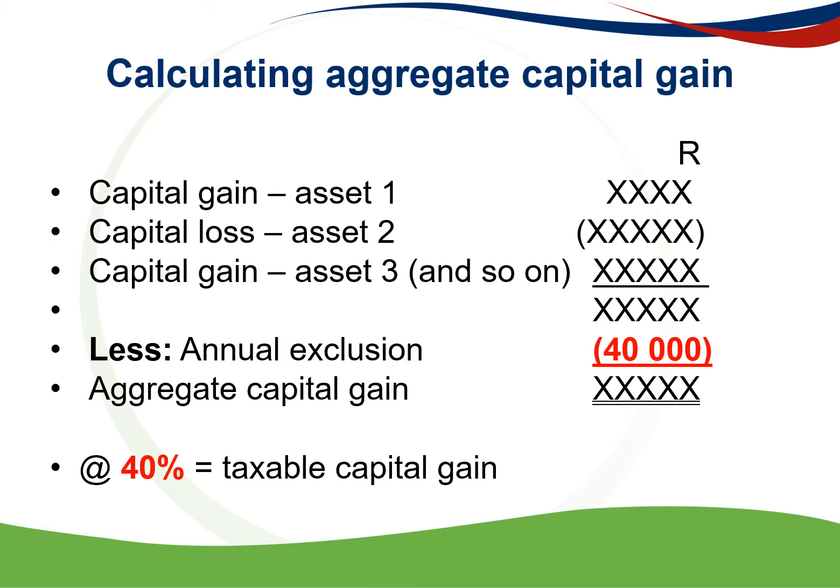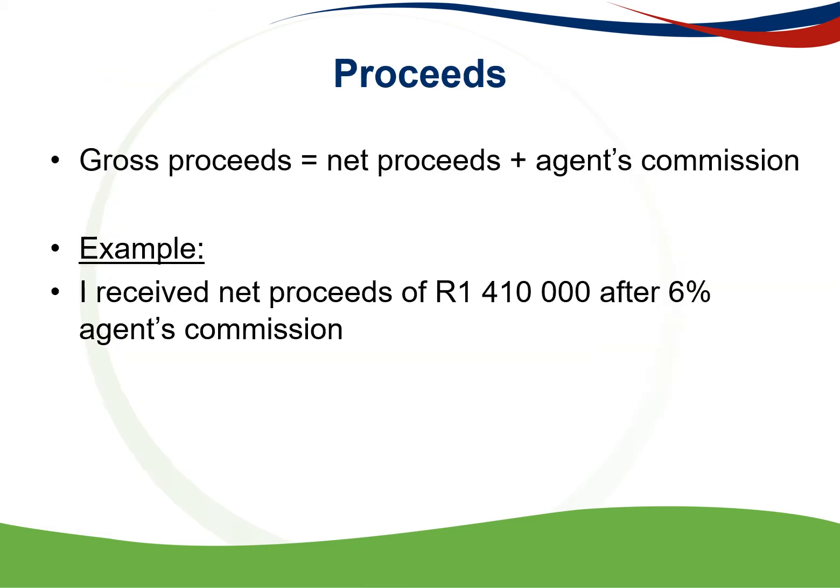The proceeds must always be the gross proceeds, and that is made up of the net proceeds plus agent's commission. So let's look at an example.